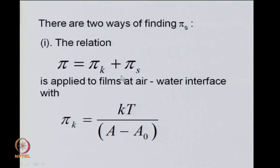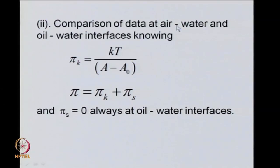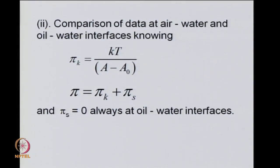Therefore there is another way to get πs: compare the force-area curves at air-water versus oil-water interfaces. At air-water: pi = πk + πs, with πk = kT/(A − A₀). At oil-water, for the reasons given, πs = 0, so pi = πk only. Using data on the equation of state for both interfaces allows determination of the magnitude of πs.